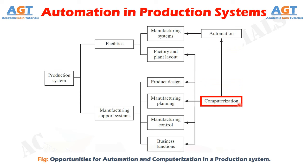Automation of the manufacturing support systems is aimed at reducing the amount of manual and clerical effort in product design, manufacturing planning and control, and the business functions of the firm. Nearly all modern manufacturing support systems are implemented using computers. Indeed, computer technology is used to implement automation of the manufacturing systems in the factory as well. Computer integrated manufacturing (CIM) denotes the pervasive use of computer systems to design the products, plan the production, control the operations, and perform the various information processing functions needed in a manufacturing firm.